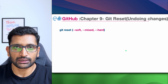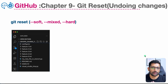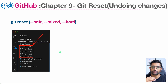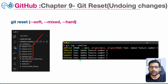Let's take a look at all three types of git reset using an example that will help you understand all three flags: soft, mixed, and hard. Here you can see my GitHub repository where I have added five files sequentially — feature one through feature five, each with a separate commit. You can see the git history for all five files. We'll use this as our base example to understand how to perform a git reset.